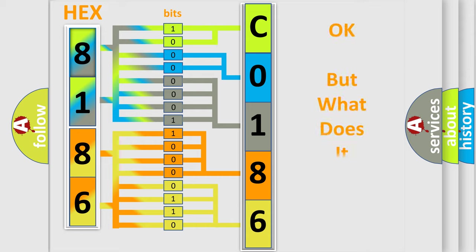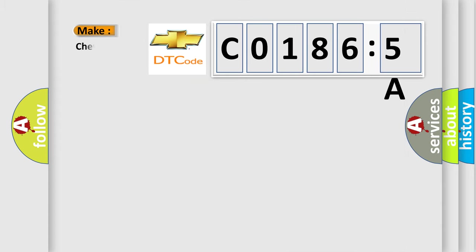The number itself does not make sense to us if we cannot assign information about what it actually expresses. So, what does the diagnostic trouble code C01865A interpret specifically for Chevrolet car manufacturers?